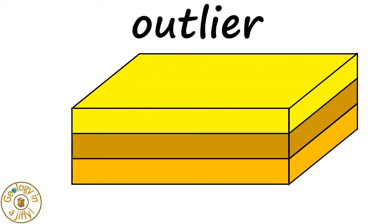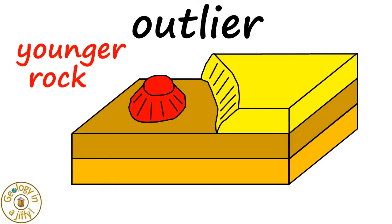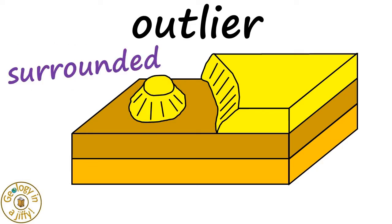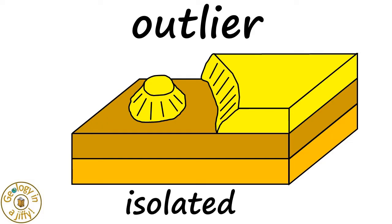an outlier looks like this, here. It formed when an area of younger rock, maybe by erosion or faulting, becomes surrounded by older rock, leaving the outlier of younger rock isolated from the same layer of younger rock.